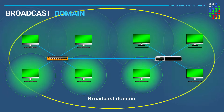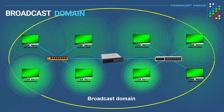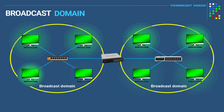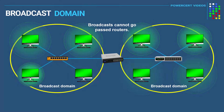If the network administrator wanted to separate this broadcast domain into two separate broadcast domains, this is done by adding a router to the network. By placing a router in between the hub and the switch, this will divide the broadcast domain into two separate broadcast domains, because broadcasts cannot go past a router. So to be clear: hubs and switches will forward broadcasts, but routers will block broadcasts.